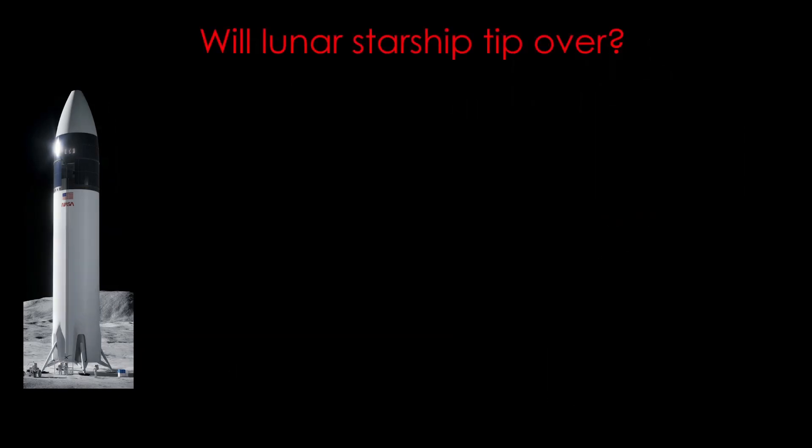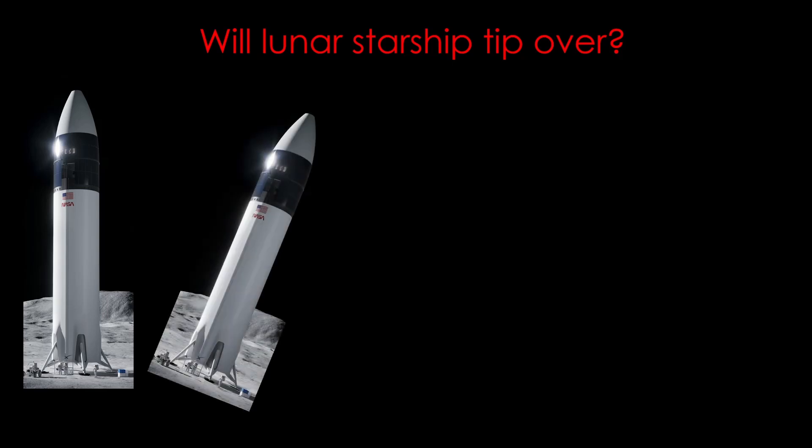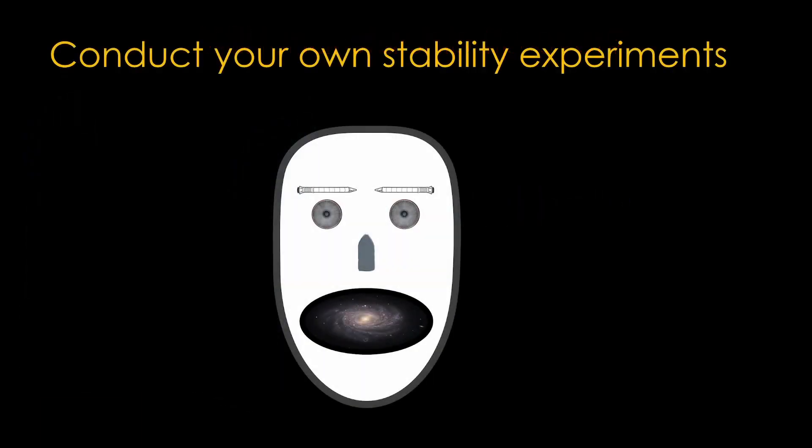Will lunar Starship tip over? Starship has a low center of gravity, and it would need to land at an angle of more than 20 degrees to be in danger, and that seems unlikely. If you enjoyed this video, conduct your own stability experiment using an empty paper towel tube, 4 quail eggs, and 135 cc's of chicken broth.